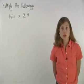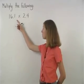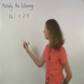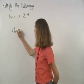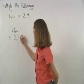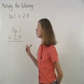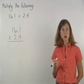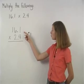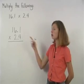To multiply decimals, 16.1 times 2.4, first line up the numbers, then multiply as though we were multiplying whole numbers. So we can think of this problem as 161 times 24.